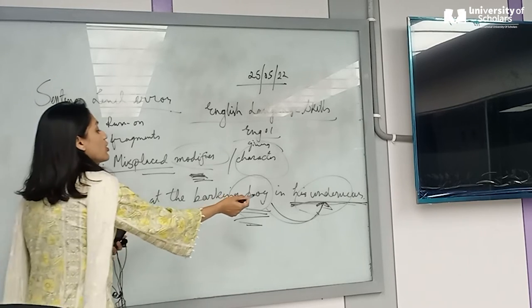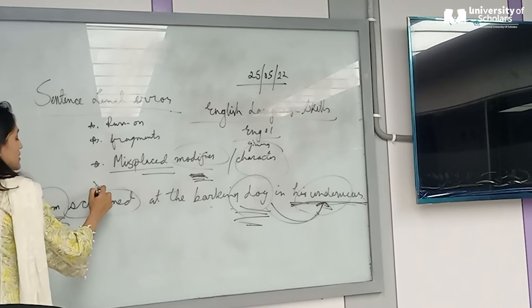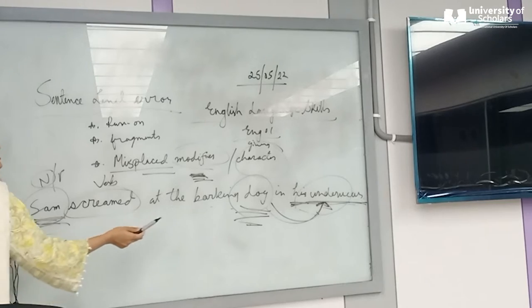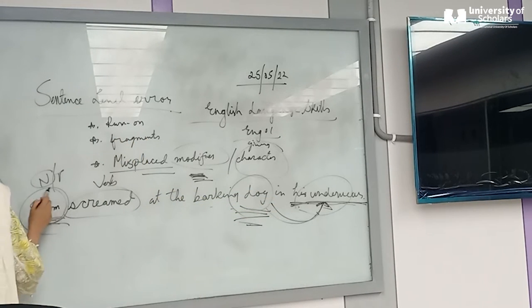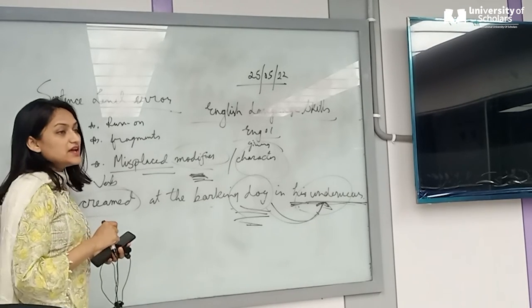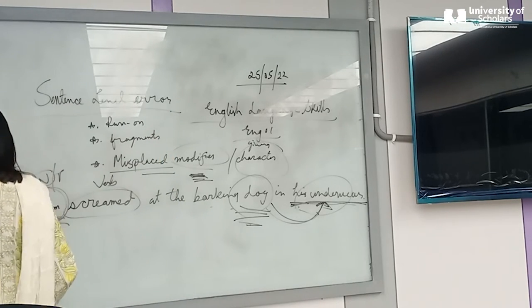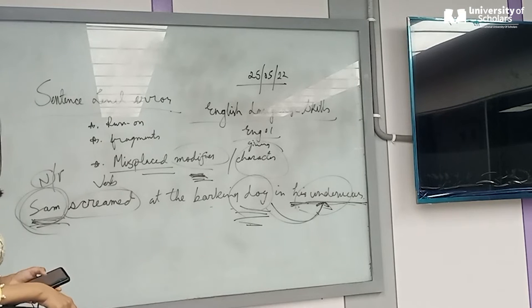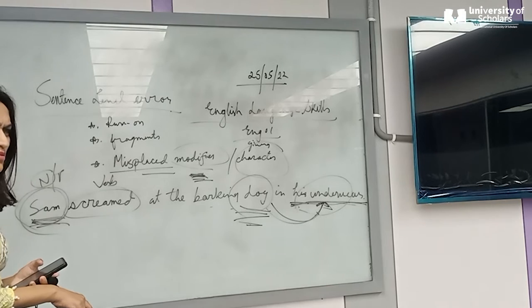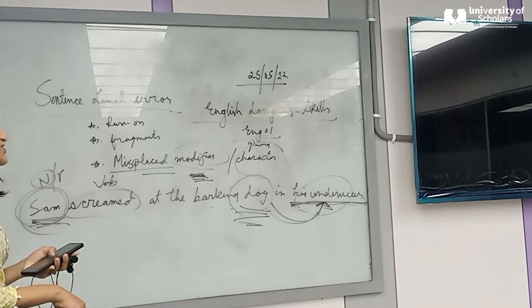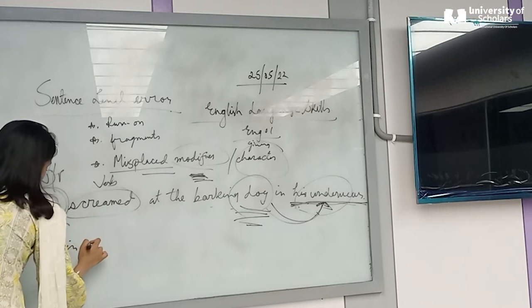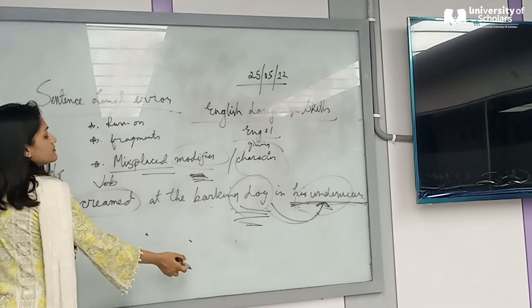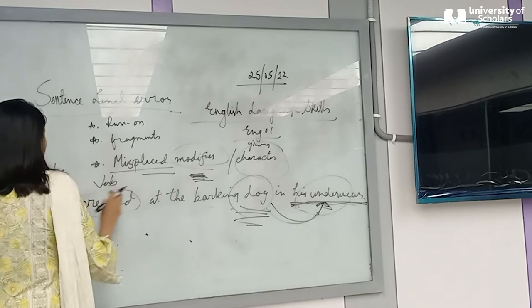The modifier should go with Sam, because it is modifying Sam — the noun, the person. The modifier has to be placed near the noun it modifies. We can correct it as: 'Sam, in his underwear, screamed at the barking dog,' or 'In his underwear, Sam screamed at the barking dog.'